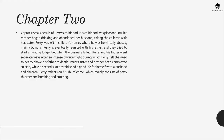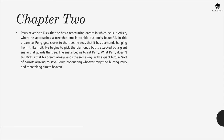Perry's sister and brother both committed suicide, while a second sister established a good life for herself with a husband and children. Perry reflects on his life of crime, which mainly consists of petty thievery and breaking and entering. Perry reveals to Dick a recurring dream in which he is in Africa, approaching a tree that smells terrible but looks beautiful, with diamonds hanging from it like fruit. He begins to pick the diamonds but is attacked by a giant snake that guards the tree. What Perry doesn't tell Dick is that his dream always ends with a giant bird — a sort of parrot — arriving to save Perry, conquering whoever might be hurting him and then taking him to heaven.